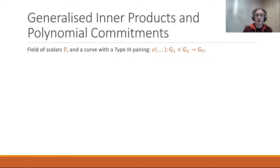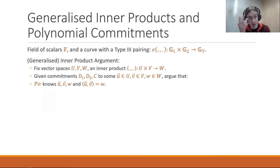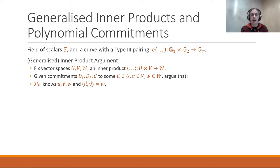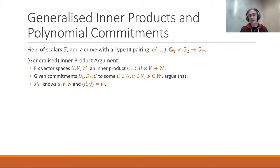The other question is: what's a generalized inner product and what's a polynomial commitment? For that we need to fix some field F and introduce some pairing-friendly curve. So we have two curves, G1 and G2, they're not isogenous, and some map G1 × G2 → GT. A generalized inner product argument is about three vector spaces U, V, W, and some inner product U × V → W. In the simplest case, U and V are vectors in F and W is a scalar from F, but you could also take U or V to be one of the two source groups — giving something like a multi-exponentiation — or even take U and V to be vectors of elements of G1 and G2, respectively, with W an element of GT.